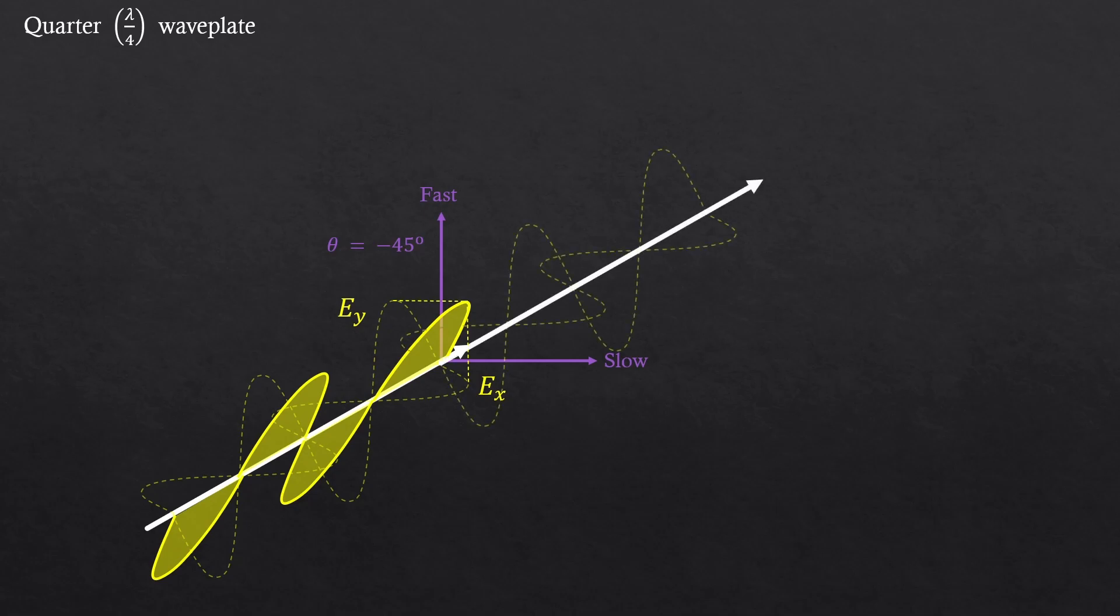As the light passes through the quarter wave plate, now the slow component will only shift by a quarter of the wave. I'll show it to you again. So now this is a different story. Because the two components are out of phase, like not matching each other, the total polarization will look like it's rotating.